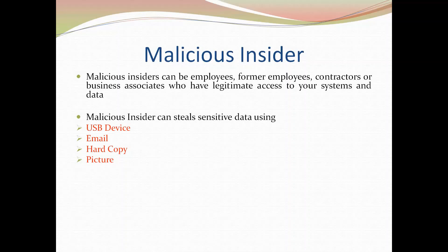How can a malicious insider send sensitive data to his handler? First, it can be sent by copying information from a computer system onto a USB device, which can then be handed over to the rival. Another means is by email — if internet access is available, the insider can use mail to send sensitive documents or files to his handler.